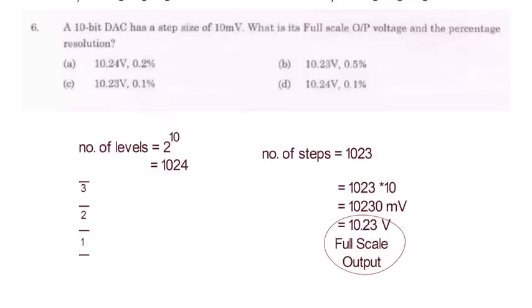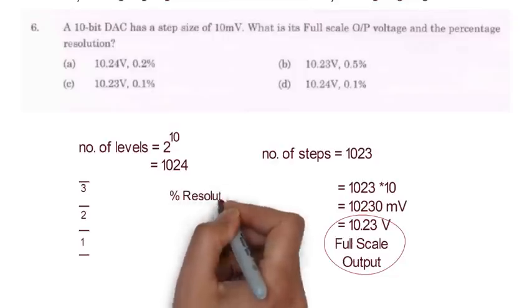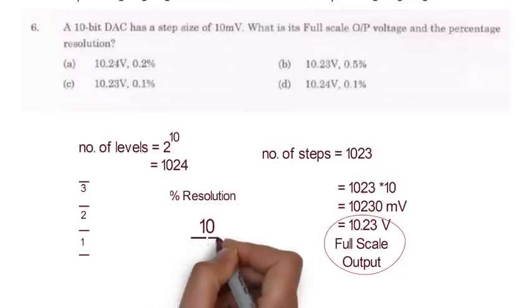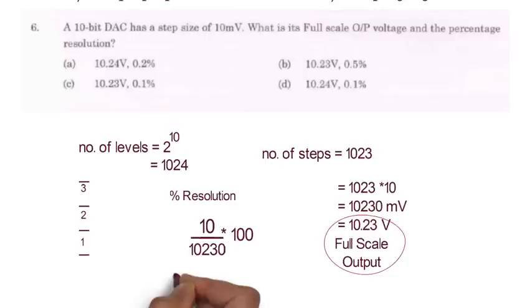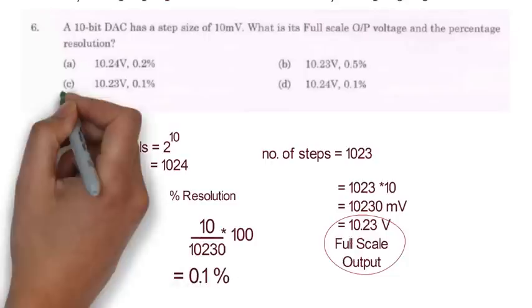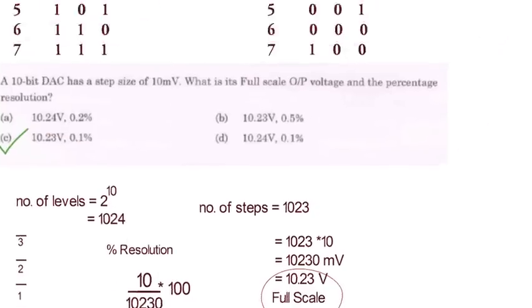Now resolution is the minimum value that can be measured. So minimum value that can be measured here is 1 step that will be 10mV. So percentage resolution will become 10 divided by 10230 into 100 that will be equal to 0.1%. So option C is the correct option.